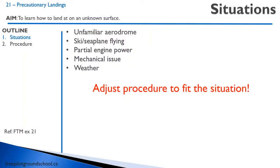There are a number of situations where you might find yourself wanting to do a precautionary landing — an unfamiliar airdrome, or if you're flying skis or a seaplane, you're always doing precautionary landings, always taking a look at the water or the snow before landing to make sure there are no obstacles. You might also do a precautionary landing because you have partial engine power or some other sort of emergency and have to get on the ground relatively quickly. It's not a forced approach, but there is some mechanical issue, or you have some bad weather.